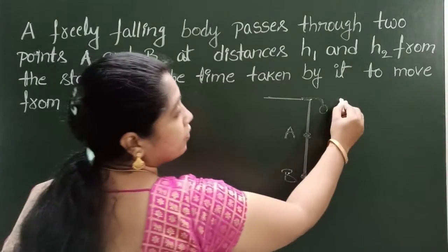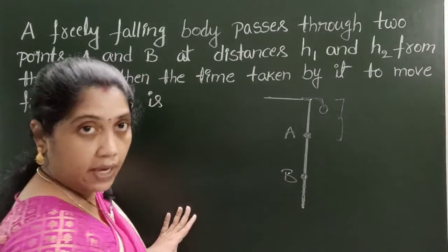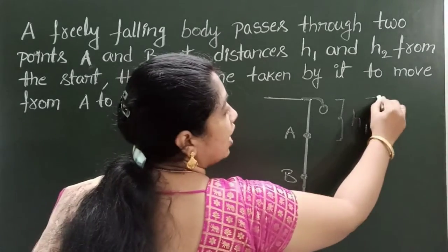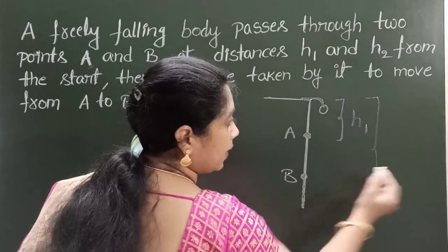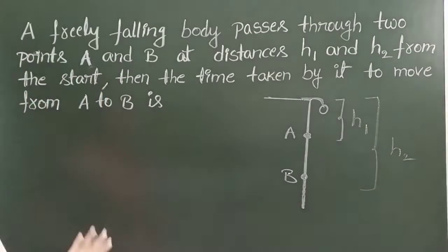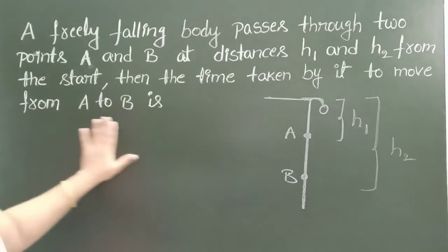So now from initial position up to point A, height is H1 and again from the start to point B, height is H2. Here we want the time taken by it to move from A to B.